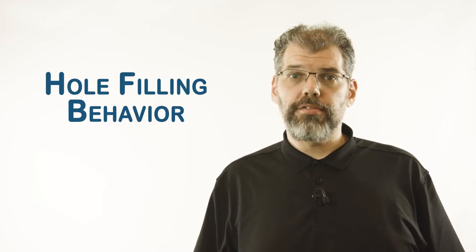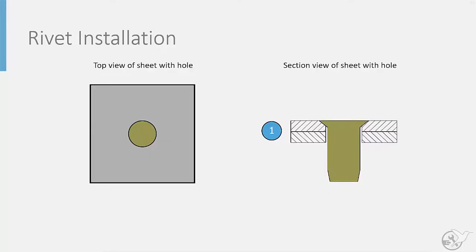They expand to fill the fastener hole. Let's look at the rivet installation process step by step for the case of two thin sheets being joined, and try to understand the benefits of hole filling behavior. We will look at a top view of this process on the left, and a cross-sectional view on the right.